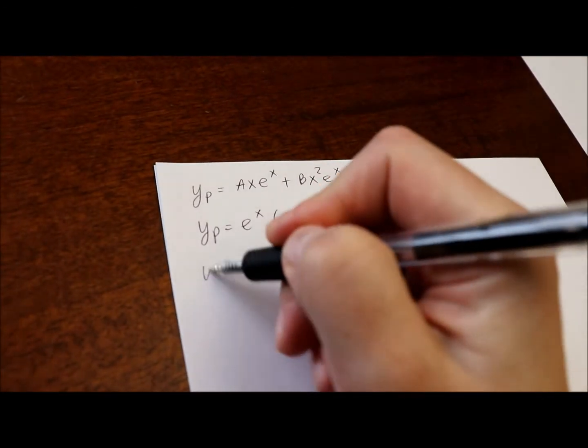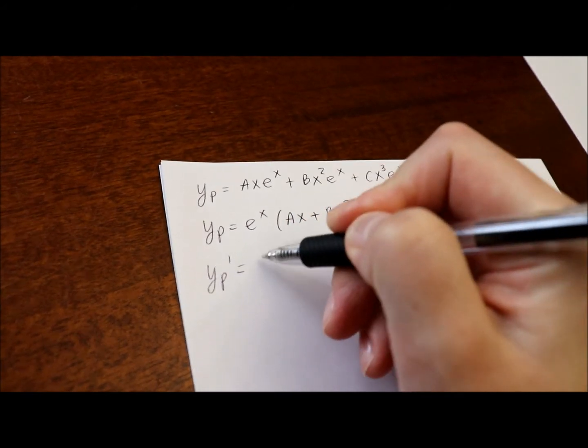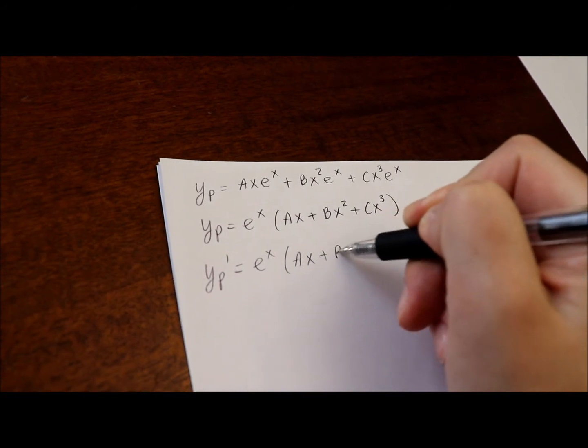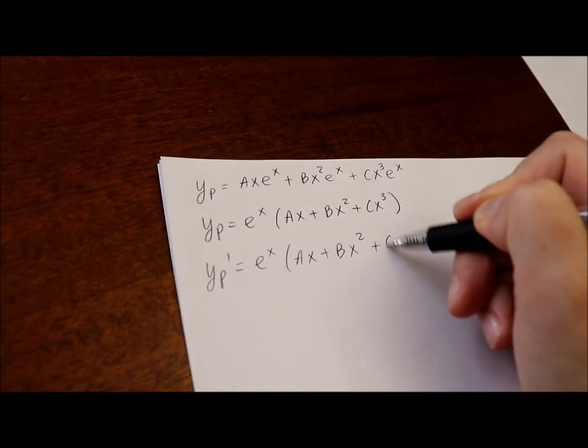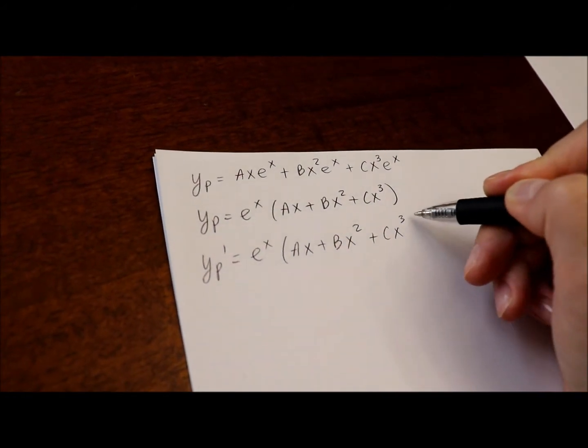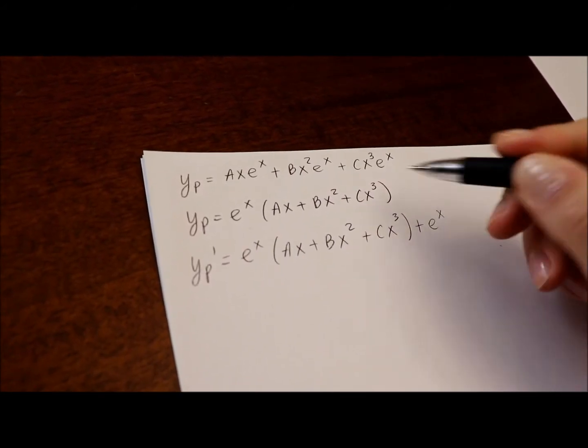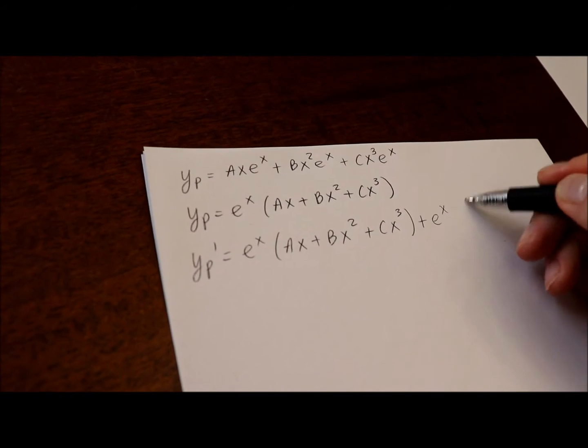We get y particular prime equals derivative of e to the x itself times the second function, plus first function e to the x times derivative of the second function.